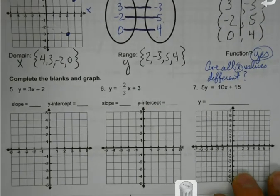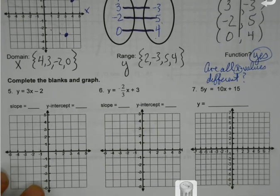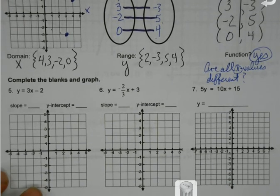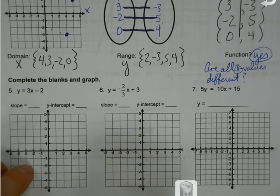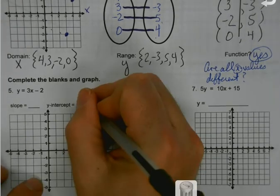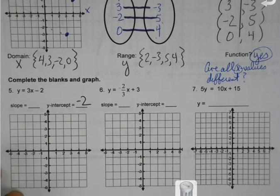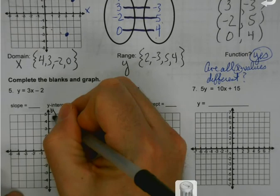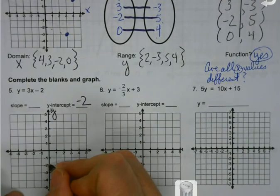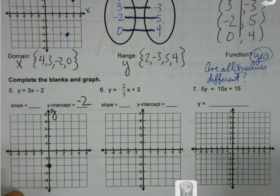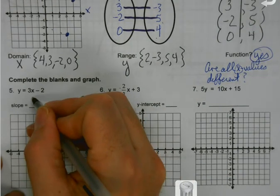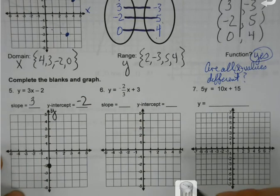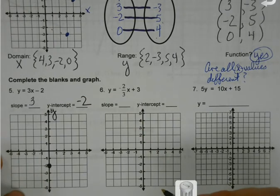Complete the blanks and graph. My y-intercept — which number is my y-intercept? Negative 2. So which direction am I going to go to put my first point? Since it's negative, we're going to go down 2. Now my slope — it's the number in front of x. It doesn't include the x, but I always want to make it a fraction. So how could I make 3 a fraction? Put it over 1.